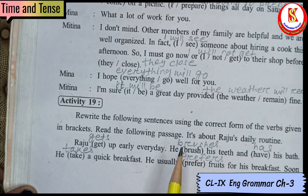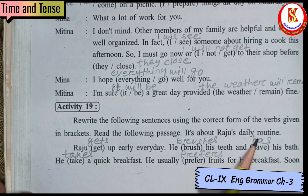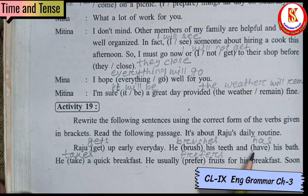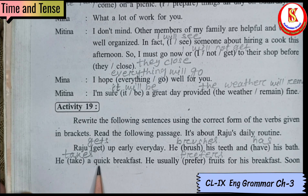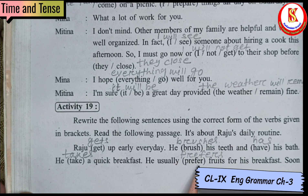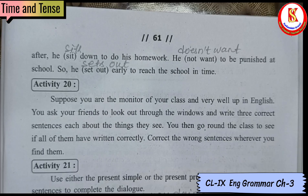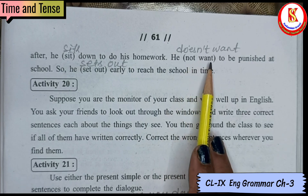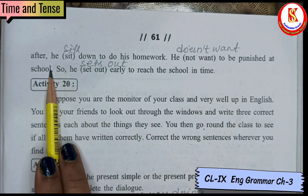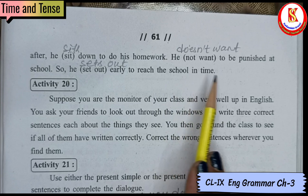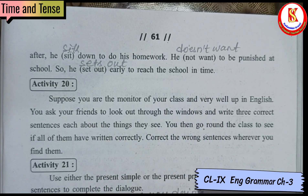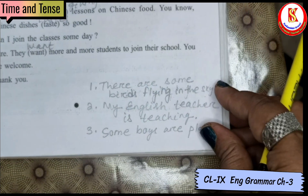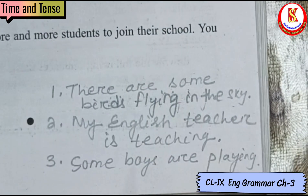Rewrite the sentences using correct form. Daily routine means present simple: He gets up early. He brushes his teeth. He has his bath. He takes a quick breakfast. He usually prefers. After he sits down to do his homework. He does not want to be punished at school. So he sets out early to reach the school in time. Now suppose you are the monitor — write three sentences. Here are some example sentences; you can read them and make more sentences like this.